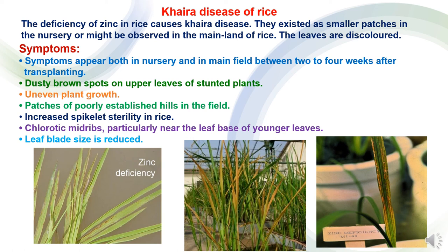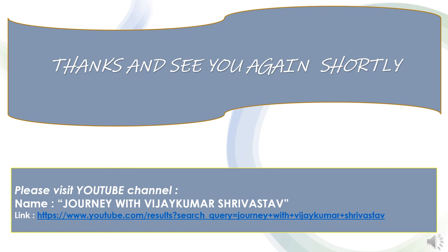Khaira disease of rice is caused by zinc deficiency in the rice field. Symptoms appear as small patches in the nursery or may also be observed in the main field within 2 to 4 weeks after transplanting. The leaves become discolored with dusty brown spots on the upper leaves of stunted plants. There is uneven plant growth with patches of poorly established hills in the field. Spikelets develop sterility. Chlorotic midribs appear particularly near the leaf base of younger leaves, and the leaf blade size is reduced compared to normal leaves.